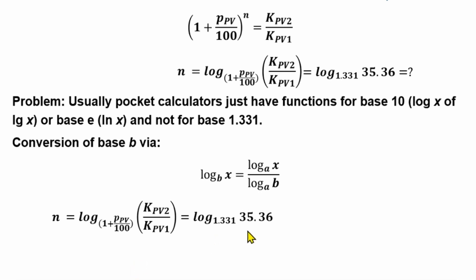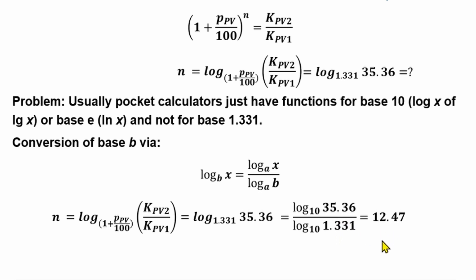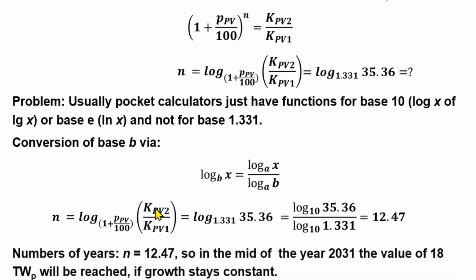So the result is 12.47 years calculated from end of 2018, meaning around mid-year 2031 we will reach 18 terawatt. Considering that growth remains constant — and the years before showed relatively constant growth — it is realistic that in a foreseeable timeframe we can supply the whole world with photovoltaics based on existing growth.